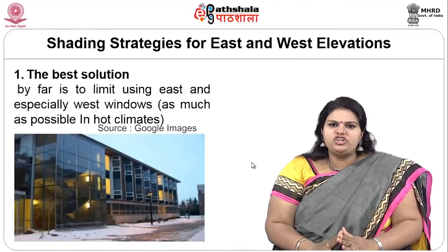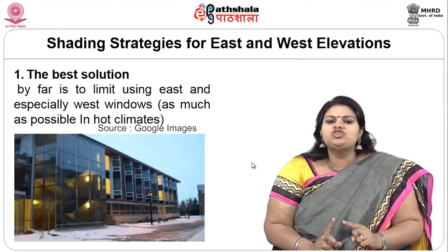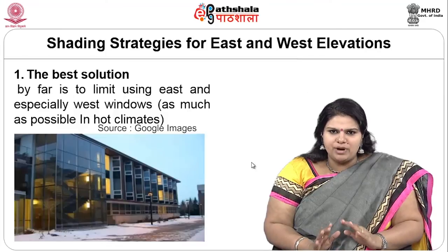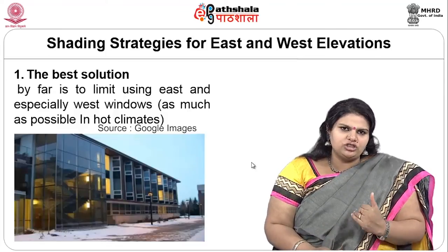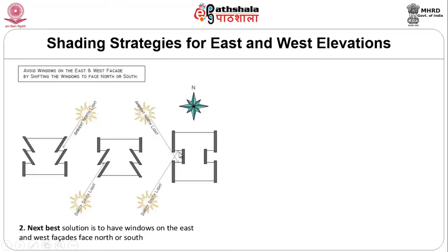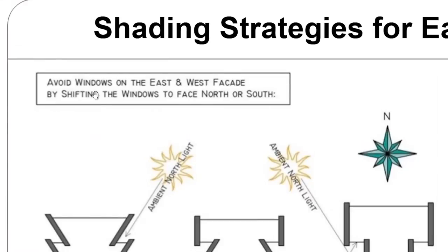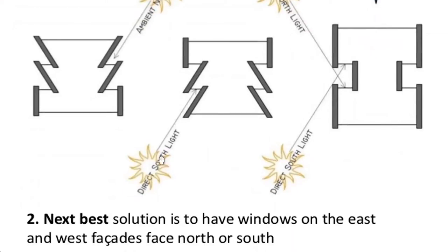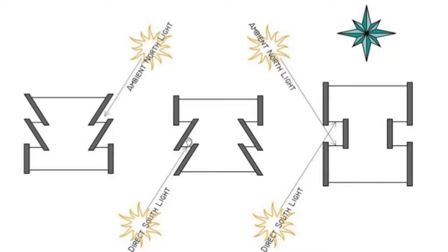The best solution for shading on east-west elevations is to limit east and west windows as much as possible in hot climates. If you do have windows, make sure they face north and south. Even windows on east and west walls can actually face north and south by aligning them accordingly, allowing ambient north light. All these solutions can be easily integrated with your design without extra investment — it is just a simple thinking pattern.